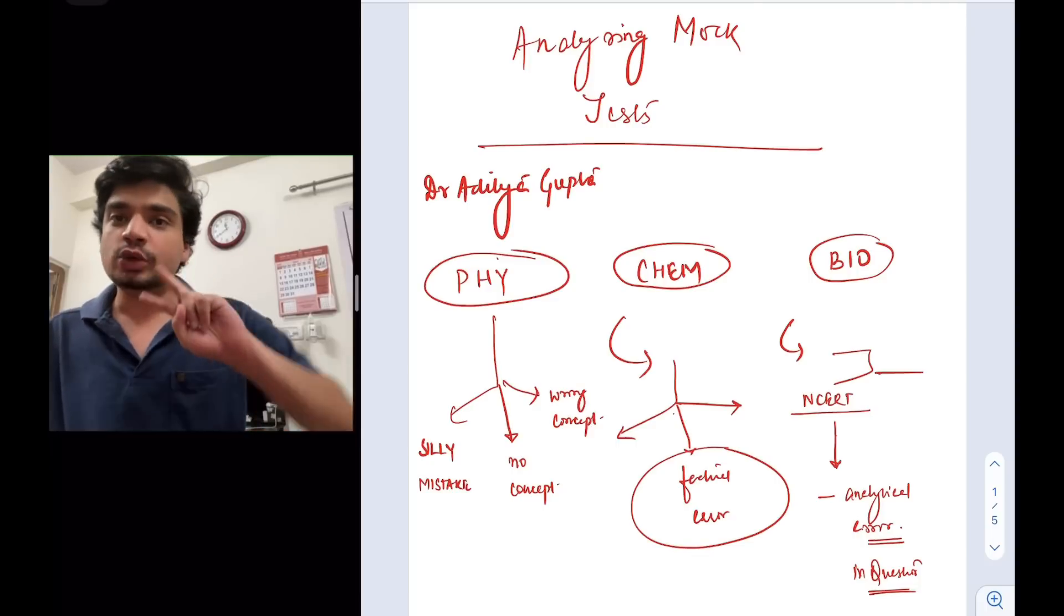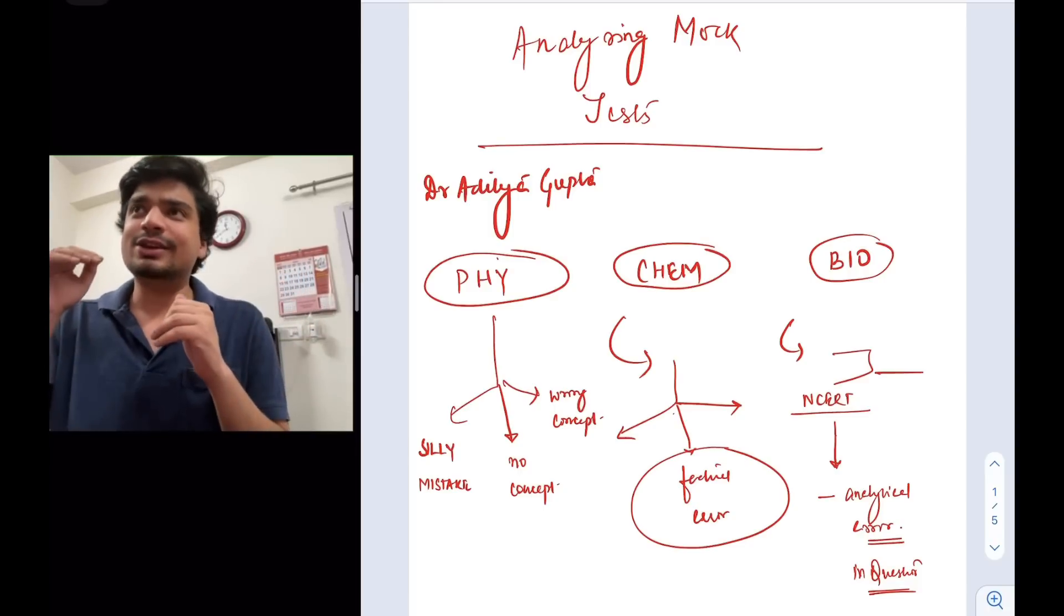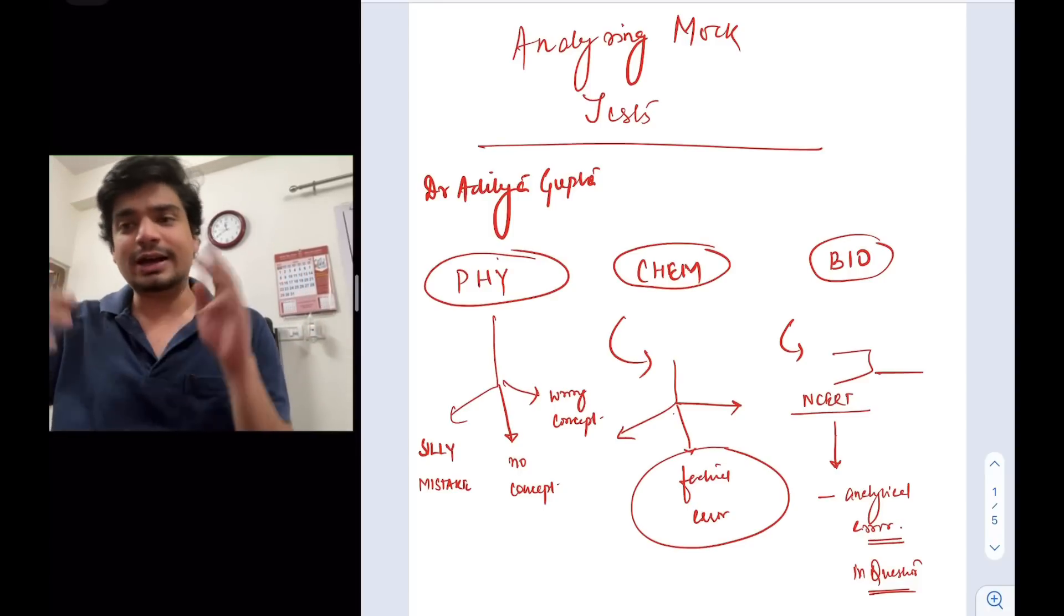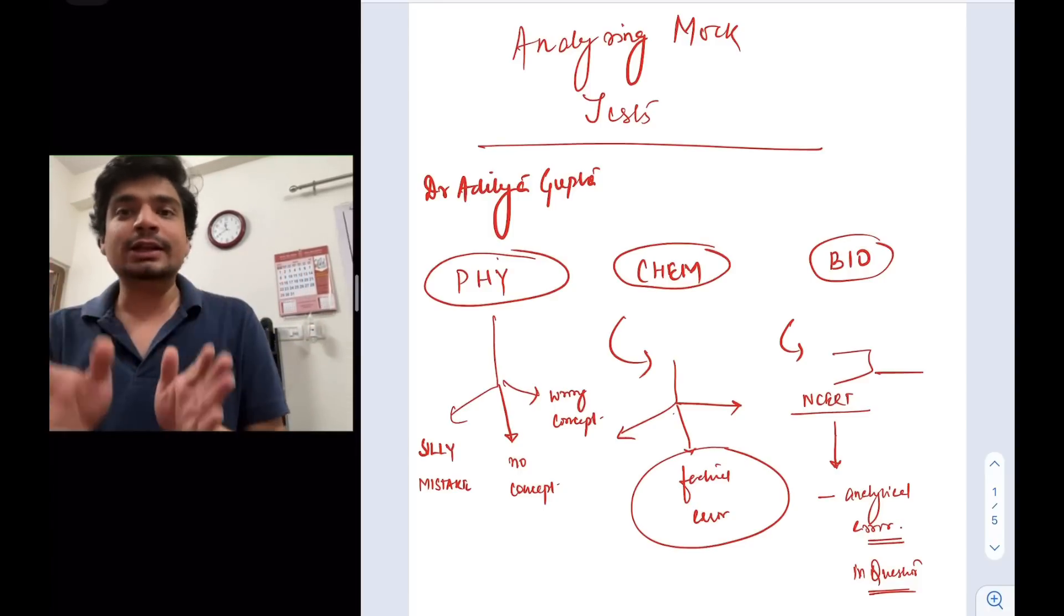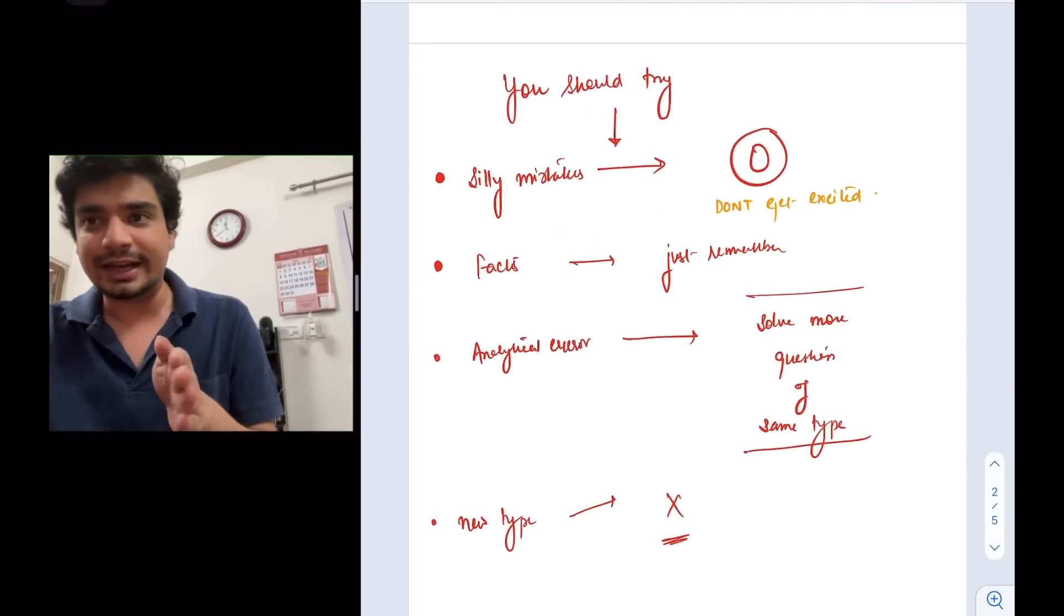Then other types is there are two types of conceptual mistakes that we tend to make. One, we don't have any idea about the concepts. Like, you know, they will be essentially going over our head. And the third one is we are applying it in a wrong way. So as far as the silly mistake is concerned, practice more tests so that they get to zero.